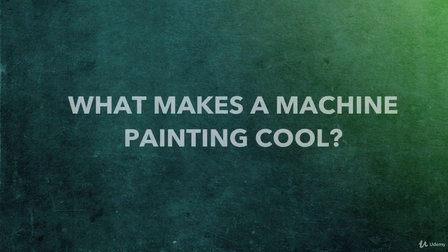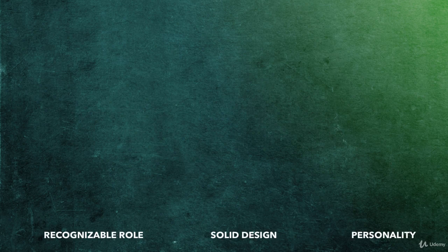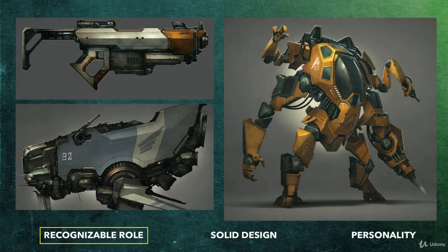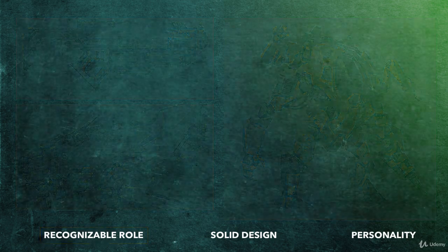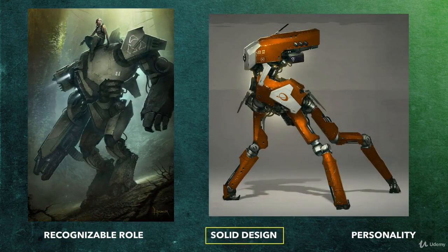So, how do we define success? What makes a machine painting cool? Well, here is a checklist of core goals to keep in mind. Great machine paintings capture the following. First, a recognizable role or function — we need to know what this machine does as soon as we look at it. Is it a utility machine or a war machine? The features that we design into our machines need to guide the viewer to the correct conclusions about function. Second, solid design, both visual and engineering. Our machines need to be visually beautiful in order to capture the viewer's attention. We accomplish this by keeping design fundamentals and shape language in mind. In terms of engineering, we need to use a lot of common sense to make sure that our machines seem like they could work in real life.